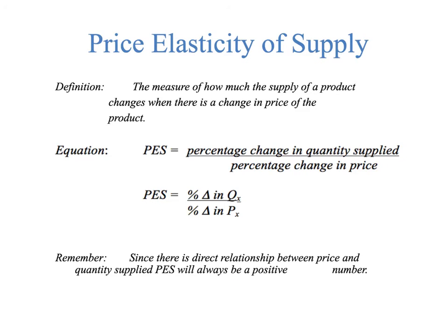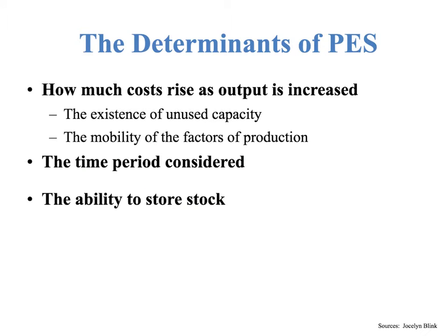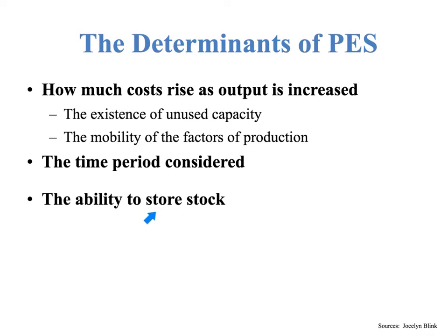So let's take a look at the determinants. There are three main determinants, and one of those determinants has two subcategories. The first is how much costs rise as output increases, and that will change the elasticity of supply. There are two subcategories: the existence of unused capacity and the mobility of the factors of production. The second major determinant of PES is the time period considered, and the third is the ability to store stock.